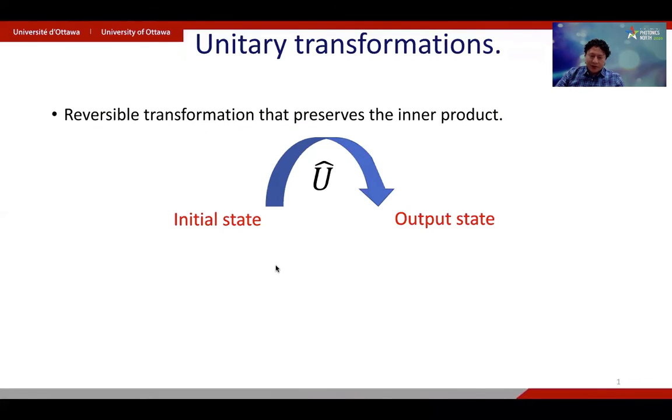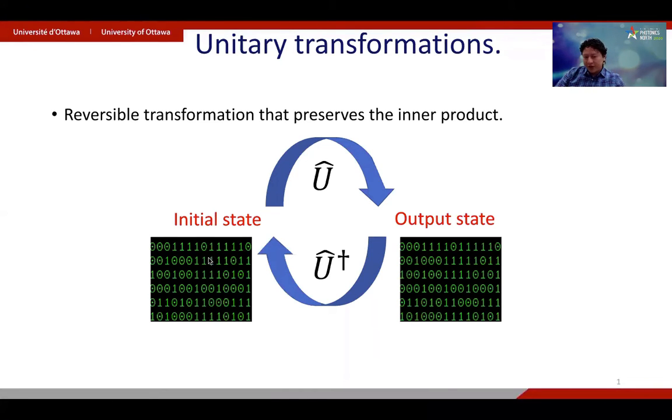In linear optics, the modular transformation you can make is a unitary that takes you from an initial state to an output state. This unitary is characterized by being reversible and by preserving the inner product you are working with. So if you encode information in your initial state, this information is preserved under the unitary.